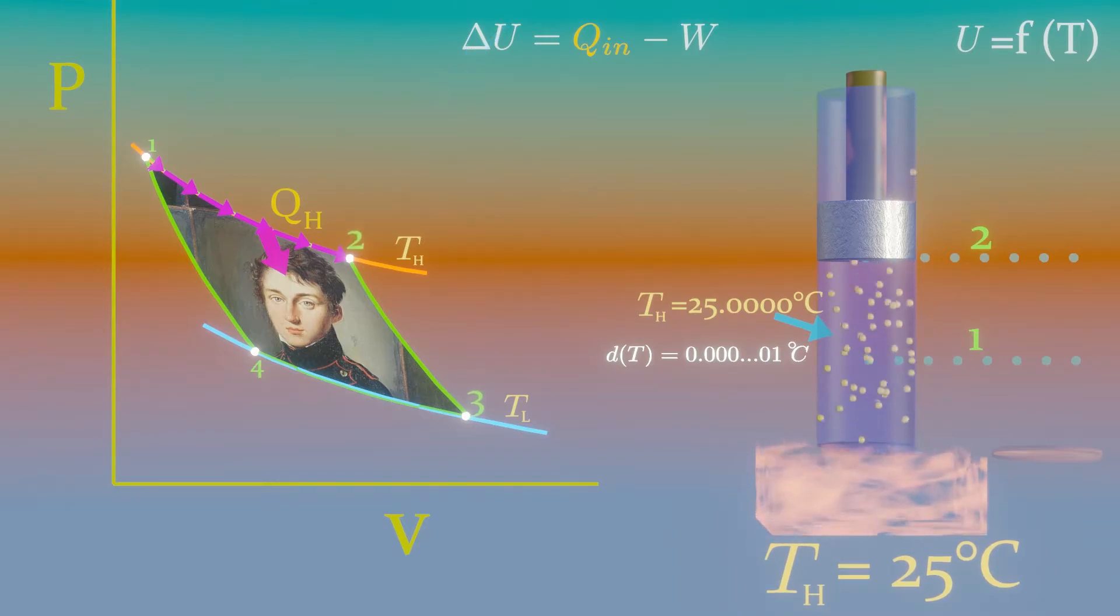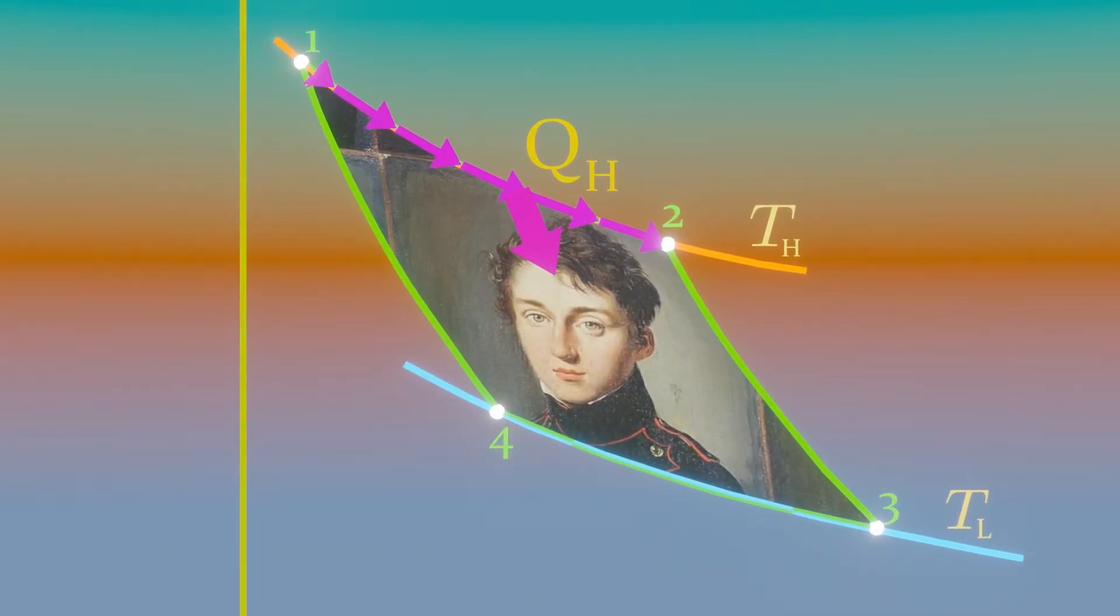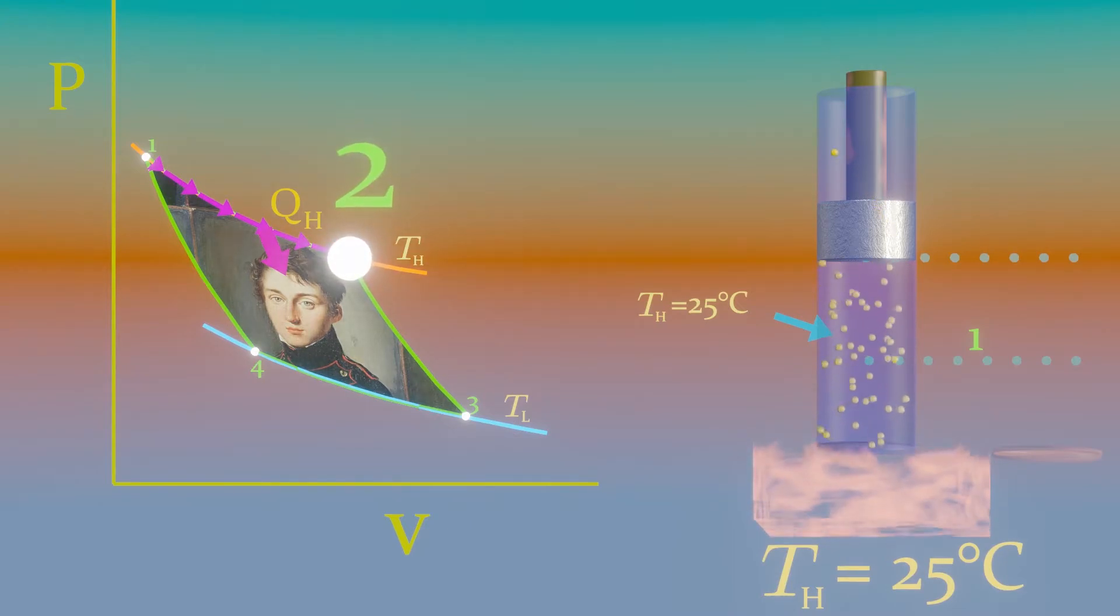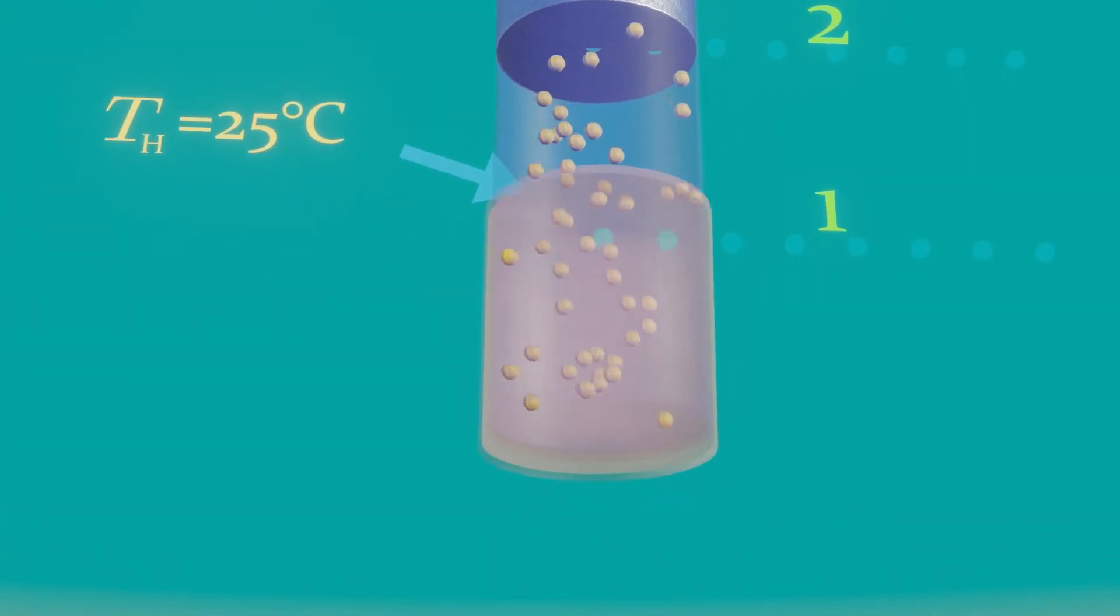Reversible adiabatic expansion. During this process, temperature drops from TH to TL. At state 2, the reservoir that was in contact with the cylinder head is removed and replaced by insulation so that the system becomes adiabatic.